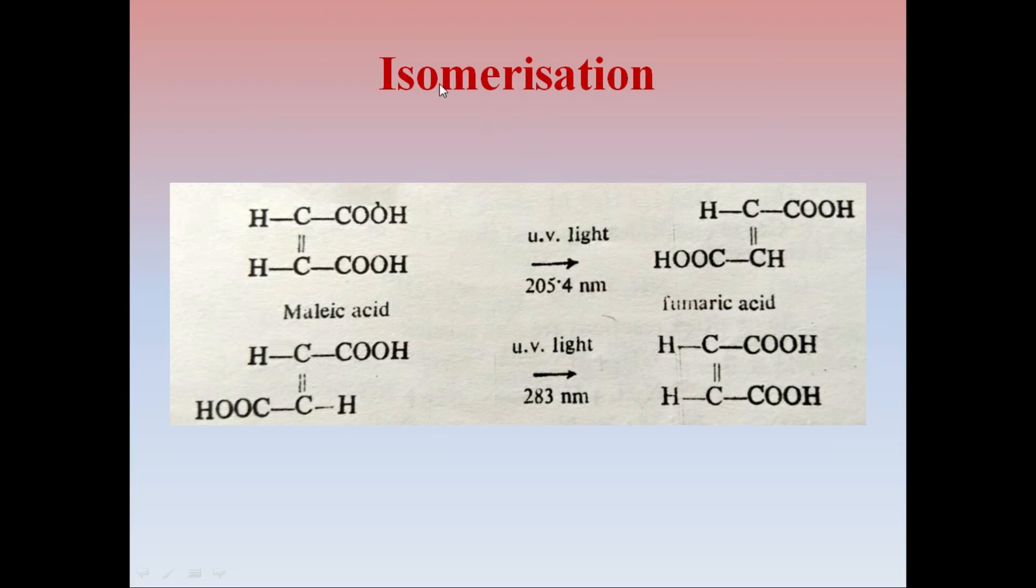Next, isomerization. Warburg in 1912 carried out transformation of maleic to fumaric acid by exposing aqueous solutions to light of wavelength 205.4 nanometer. The quantum yield of this conversion from maleic to fumaric is observed to be 0.03. Also it is observed that fumaric acid on subjected to radiations of wavelength 283 nanometer forms maleic acid with quantum yield 0.11. This is how, due to presence of radiation, we can convert a molecule from one isomer to another isomer.